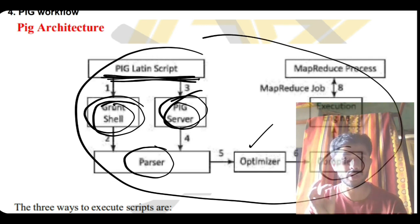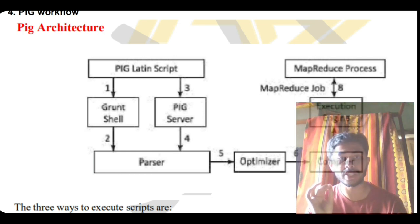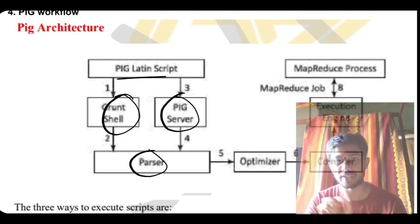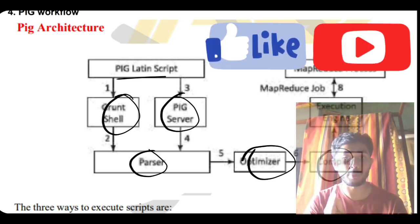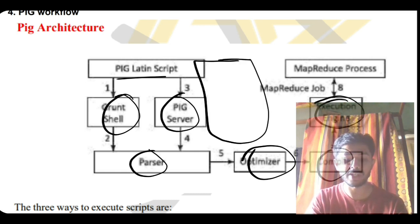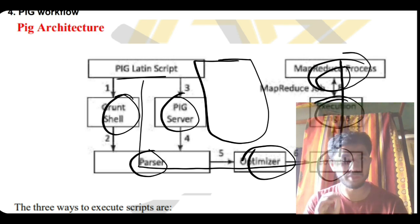Write this architecture in your own words once or twice to get a good idea — it doesn't have to be exact, but it should be relevant and match all the key points. The key points are: it uses PIG Latin script; it passes the query to both Grunt Shell and PIG server; these parallel-process and send to the parser; parser parses the data; sends to the optimizer which removes irrelevant data; then to the compiler for compilation; then to the execution engine. Once executed, the large data is sent to MapReduce, reduced, and comes back to the compiler, then back to the PIG Latin script as the final output.